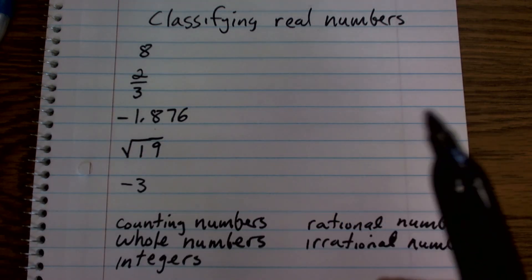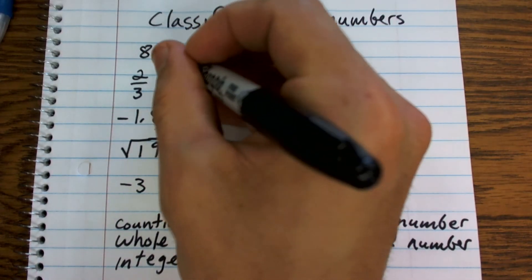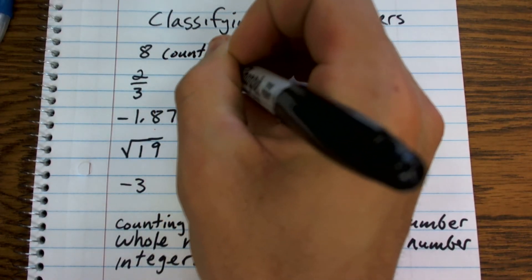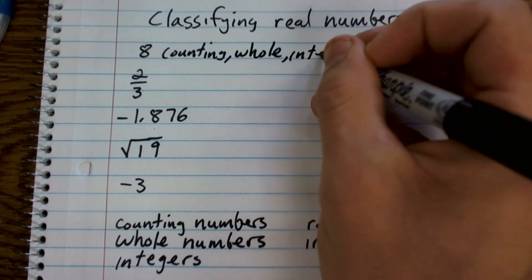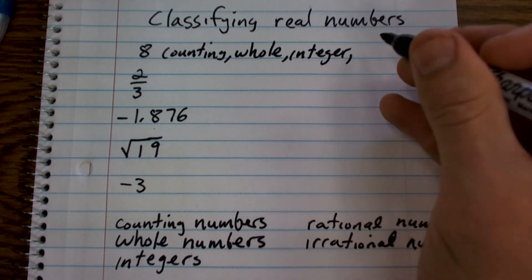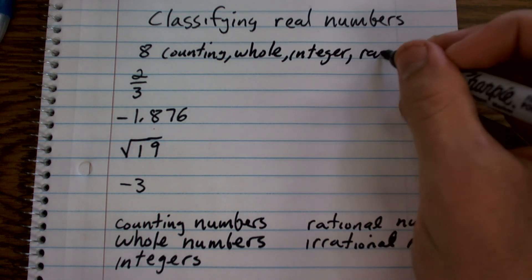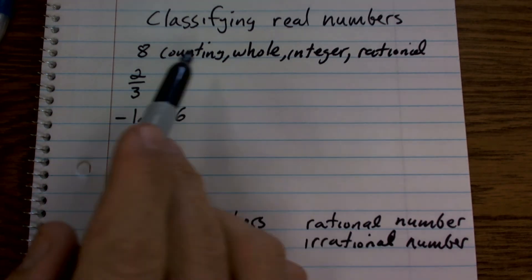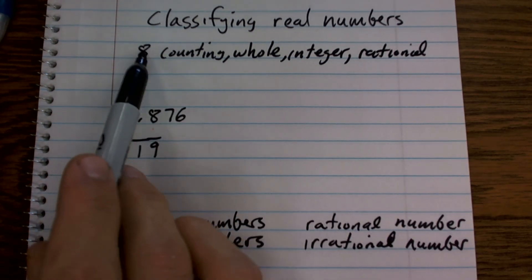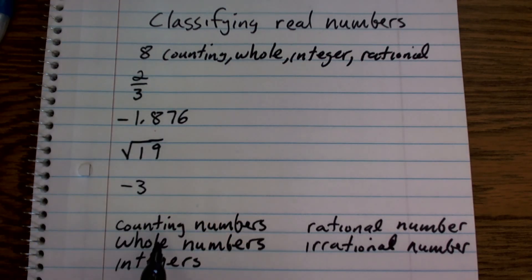If we look at number 8, that is definitely a counting number. It is a whole number. It is an integer. And it is also a rational number. That fits this 8, falls under the definition of all of these, except for an irrational number.